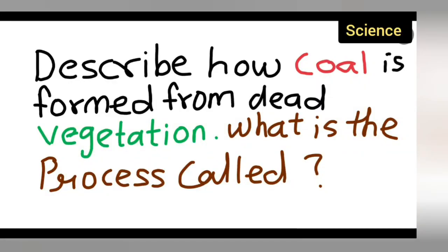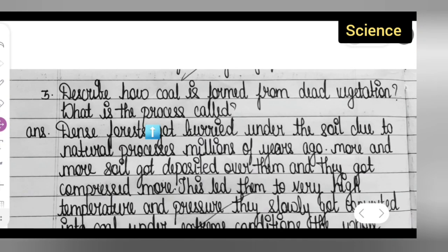Welcome to today's class of science. Today's question is taken from class science. The question is: describe how coal is formed from dead vegetation. What is the process called?